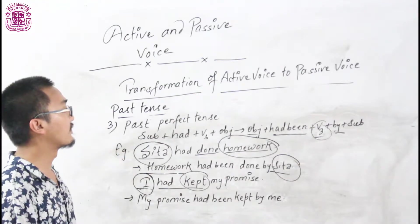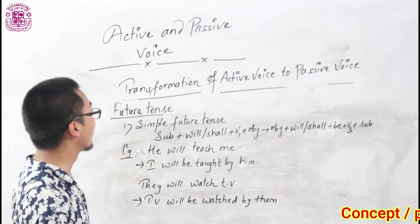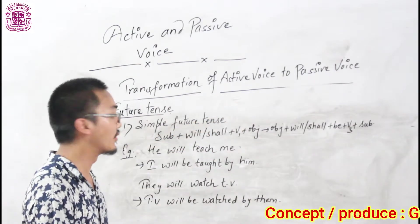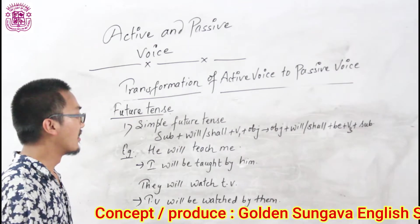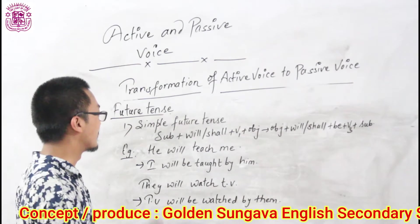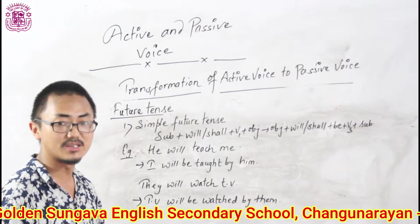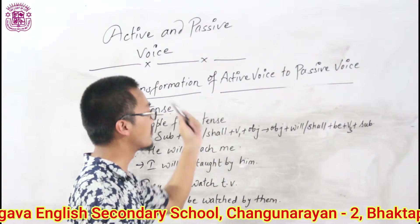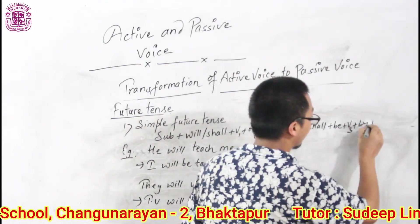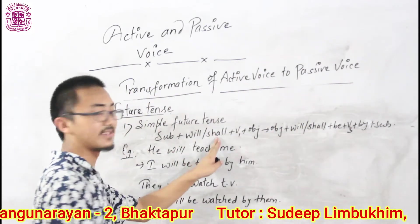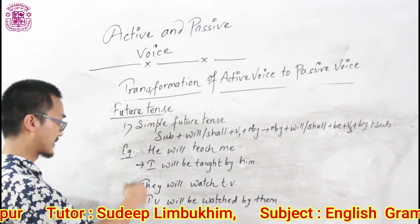Now we are going to read about the transformation of active voice to passive voice in case of future tense. Next we are going to learn about simple future tense. This one is much easier as we have already learned about present and past. The structure of simple future tense is: subject plus will or shall plus V1 plus object. While transforming this structure into passive voice, subject becomes object and object becomes subject. Then 'will/shall plus V1' will be changed into 'will/shall plus be plus V3 plus by'.